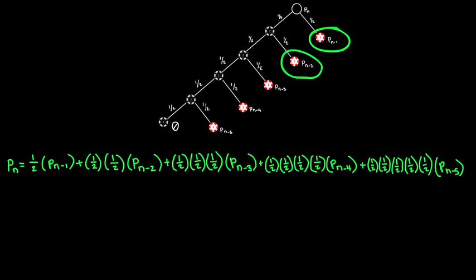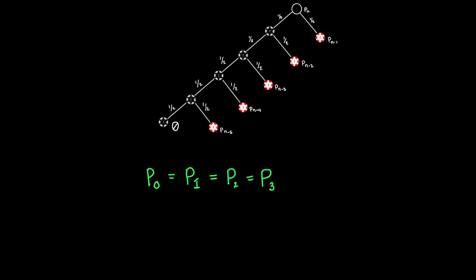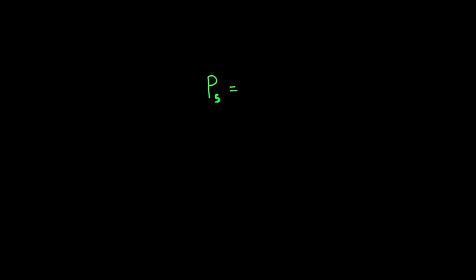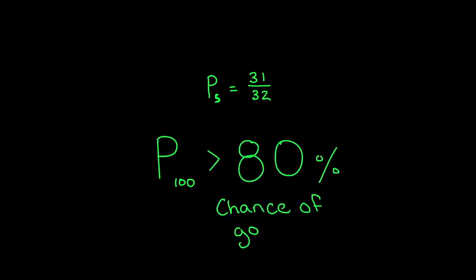Well, if we spin the wheel at most four times, we can't have five consecutive blacks. Therefore, p0, p1, p2, p3, and p4 are all 1. And then plugging this into the formula, we get p5 is 31 over 32, which is exactly what you would get if you directly analyze it. So marching down the line, we see if the wheel is spun 100 times, there's already over an 80% chance of going bankrupt.